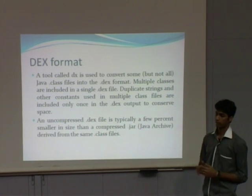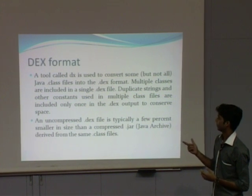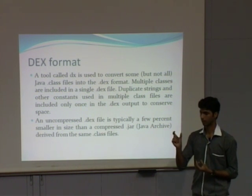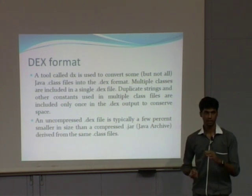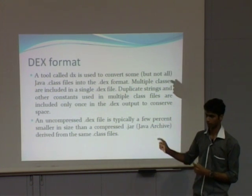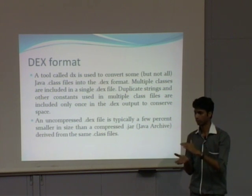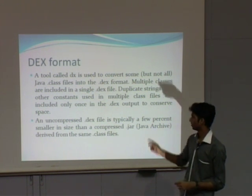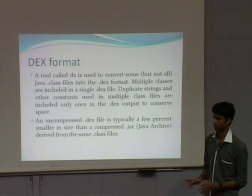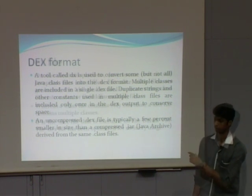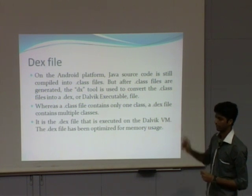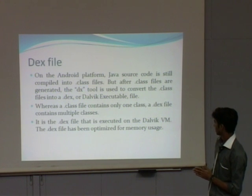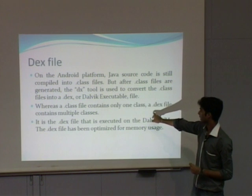Now, what exactly is the .dex format? The tool dx converts class files into a .dex file. With Java bytecode, when a Java program is compiled, a separate class file is created for each class. But this is not the case with the .dex file — when we compile Java code, multiple class files can be merged and put into a single .dex file. So size-wise, it is quite smaller compared to Java bytecode, which is why it uses less memory. In summary, a class file contains only one class while a .dex file can contain multiple classes.